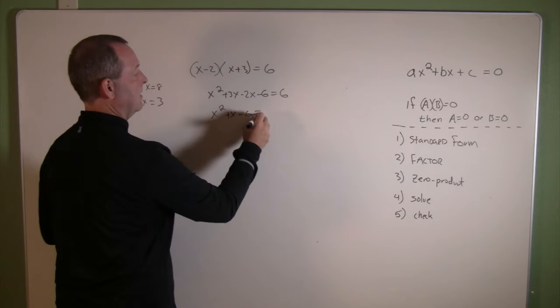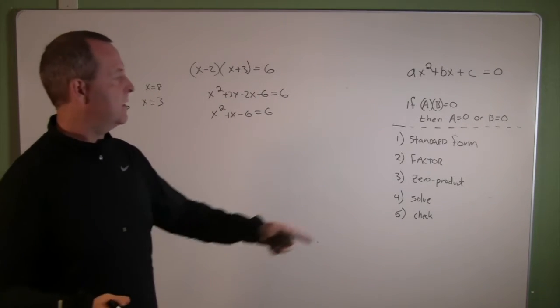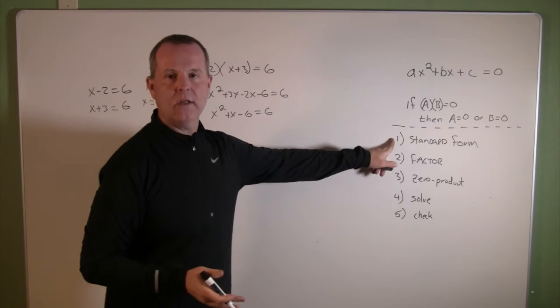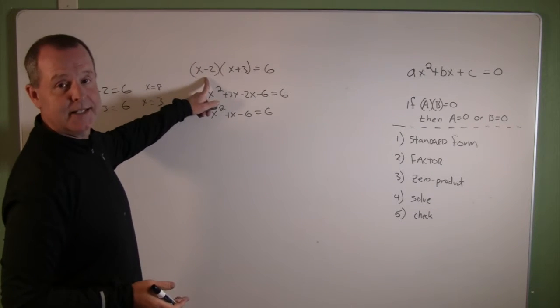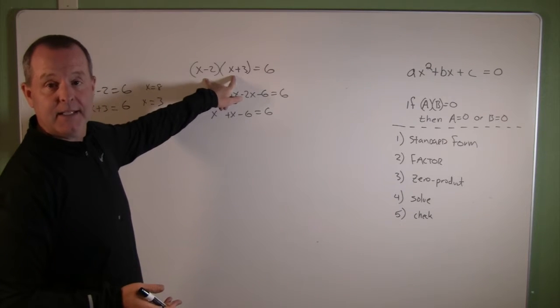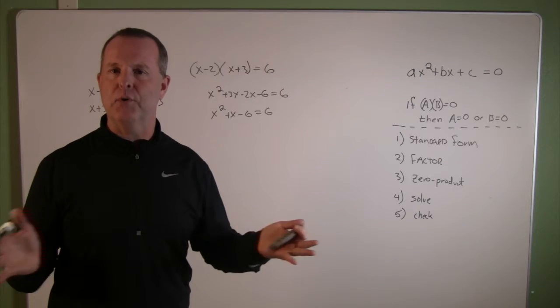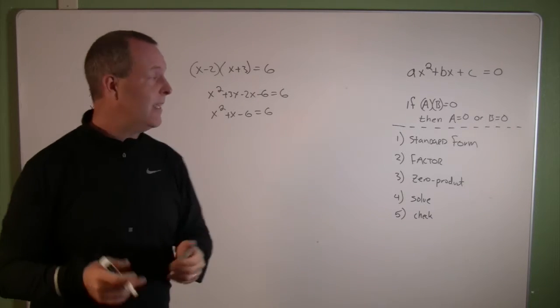Now I'm getting close to standard form. I guess my goal all along was to rewrite this in standard form, and my strategy for doing that was to first multiply these things together. Usually when we factor we factor them out, but here I have to put them together first to begin.